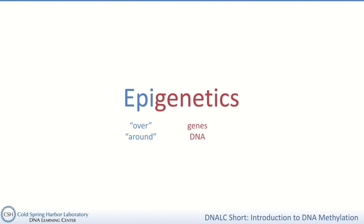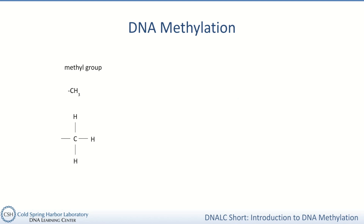There are a variety of epigenetic marks, and today I'm just going to discuss one of them: DNA methylation. DNA methylation refers to the addition of a methyl group to DNA. A methyl group is one carbon atom, which is the C here, bonded to three hydrogen atoms, which are the H's. These methyl groups get added onto cytosine most often, which is also abbreviated C in DNA, but this is different than the C for carbon.